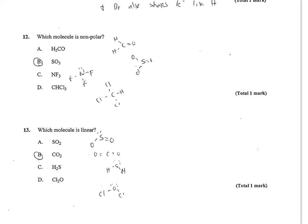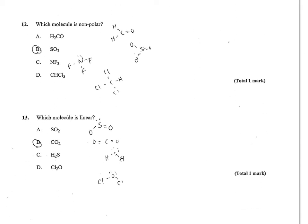Number 13, which molecule is linear? You just had to sketch them out. And if you sketch them out, you see all but CO2 have lone pairs bending the shape. So only B, CO2 is linear.